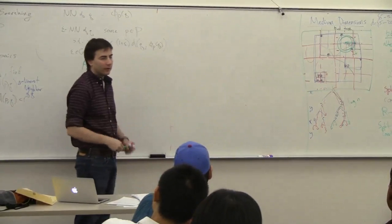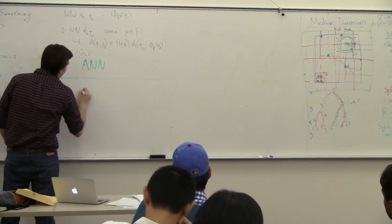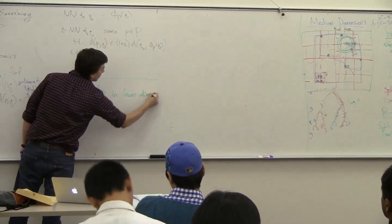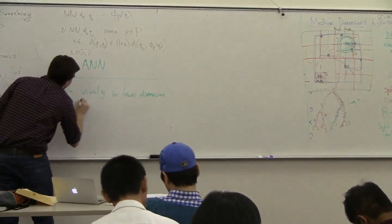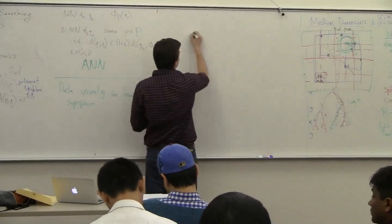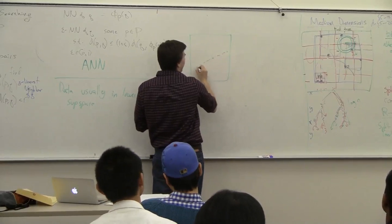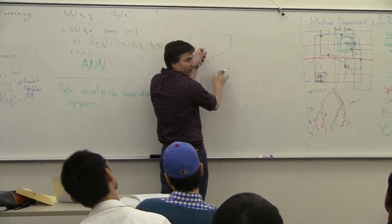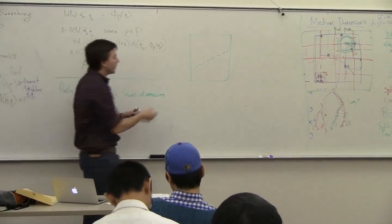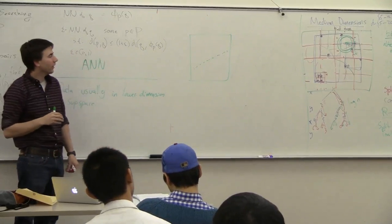So one thing you can do is this approximate version. The other thing is that your data is usually in a lower-dimensional subspace. This is hard to draw a picture of, but think of two dimensions where your data lies on a line — it's in a one-dimensional subspace embedded in two-dimensional space. Your data often looks like it lies in a lower dimension, though it usually doesn't exactly lie there — there's some routing noise in every coordinate.